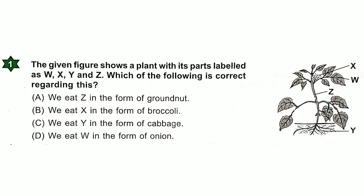Question 1: The given figure shows a plant with its parts labeled as W, X, Y, and Z. Which of the following is correct regarding this? Answer is option B.